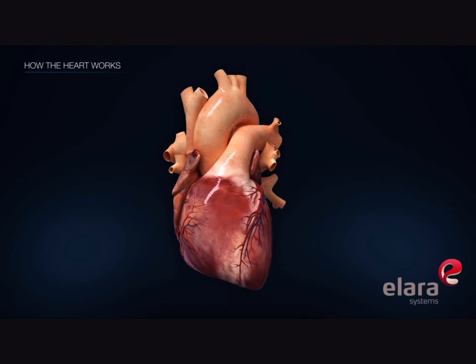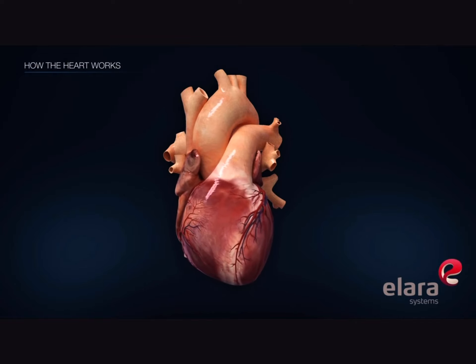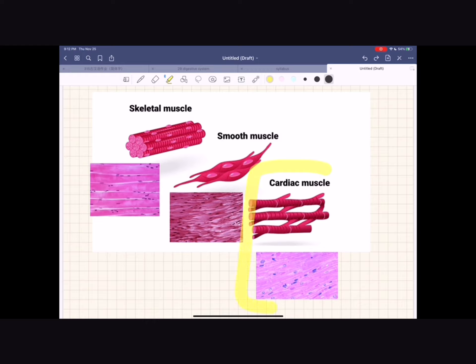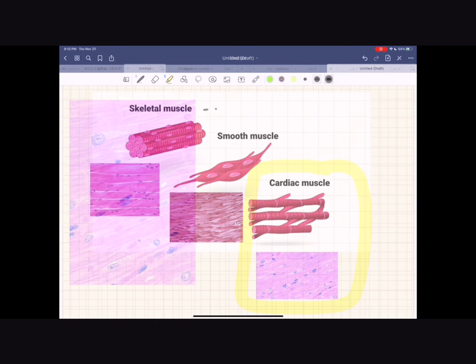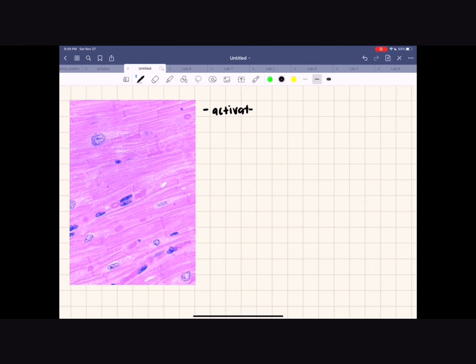The heart controls this order of events by controlling the contraction of each chamber through a conduction system, which utilizes special heart muscle cells. Similar to skeletal muscle cells, these heart muscle cells, called cardiac muscle cells, are activated by a change in the electron gradient inside the cell. However, unlike skeletal muscle cells, cardiac muscle cells have their own special features.